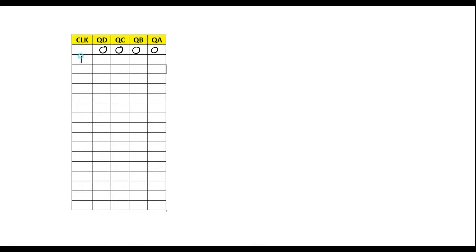First I will write the truth table for a 4-bit binary ripple counter. At the beginning we will assume that all the flip-flops are in reset state. At the first positive edge of the clock it will become 0001. At the next clock signal it will become 0010. At the next clock signal it will be 0011. At the next clock signal it will be 0100.